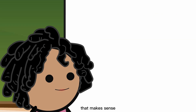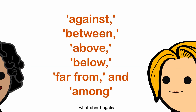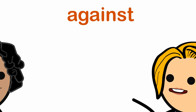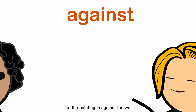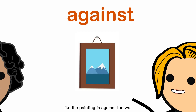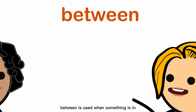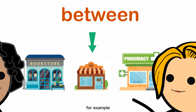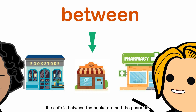That makes sense. What about 'against,' 'between,' 'above,' 'below,' 'far from,' and 'among'? Certainly. 'Against' is used to indicate contact with a surface, like the painting is against the wall. 'Between' is used when something is in the middle of two or more objects — for example, the cafe is between the bookstore and the pharmacy.